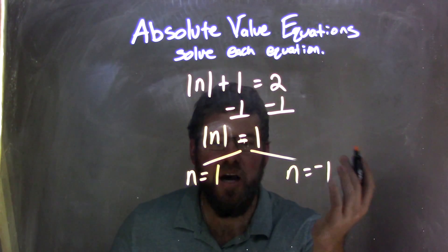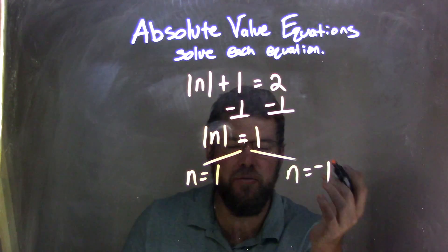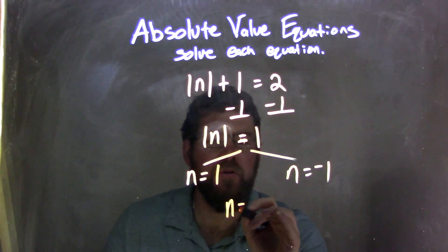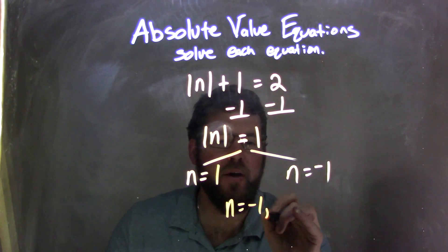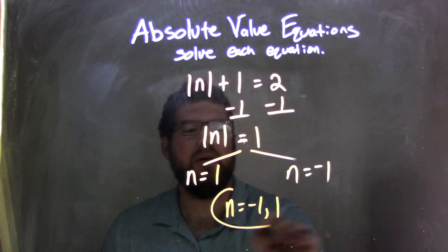At that point, we're pretty much done. n is already by itself and equals two numbers, so we have n equals, least first, negative 1, and greater, positive 1. And there's our final answer.